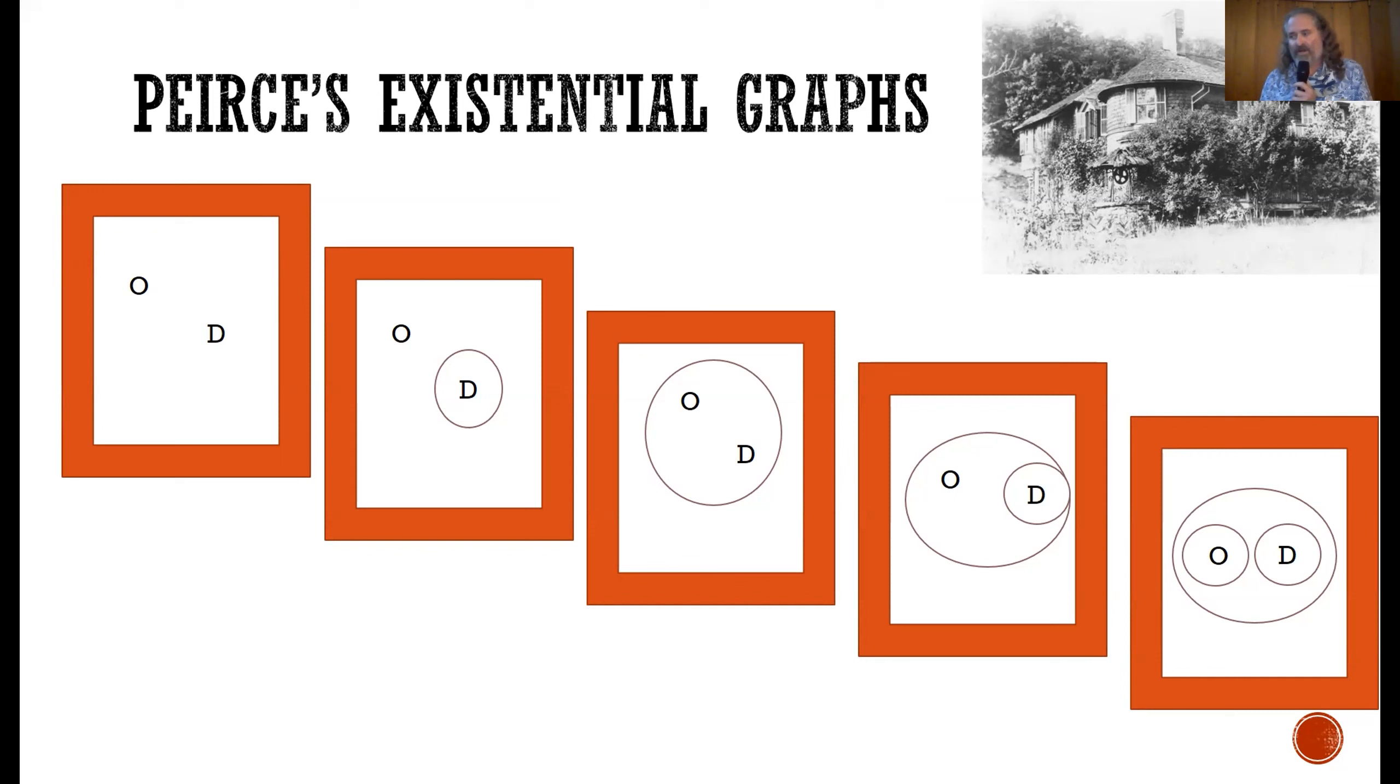So if there's an owl in the tree, or a propositional symbol thereof, perhaps O, is scribed on the sheet, we are to understand that sentence as being asserted. And if that sheet also bears the inscription, the dog is barking, or a symbol thereof, then that statement is also to be understood as asserted. So here we have this first depiction of the phemic sheet, or Peirce's sheet of assertion here on the left. It has the depiction of two propositions, two statements being asserted.